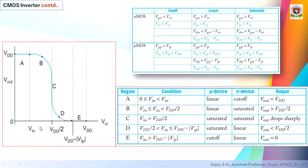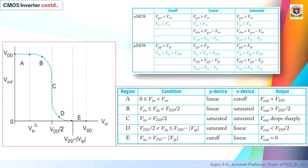When the input exceeds VTN, the N device enters the saturation region. For example, if VDD is 5V and input ranges from 1V to 2.5V, the output is from 5V to 2.5V, representing VDS for the N transistor. VDS is large while VGS is smaller. When VDS is greater than VGS minus VT, the transistor is in saturation — hence in region B, the N transistor is in saturation.